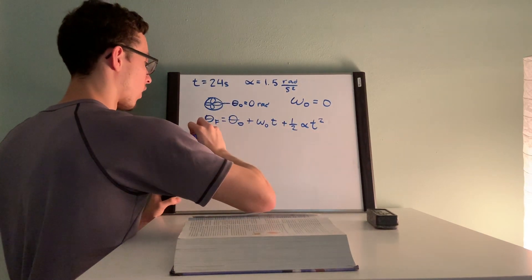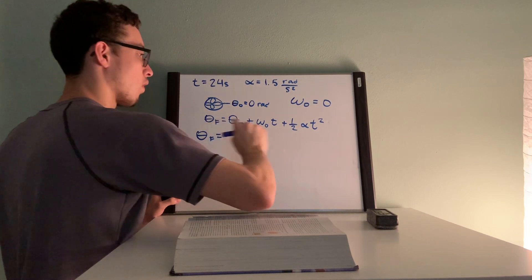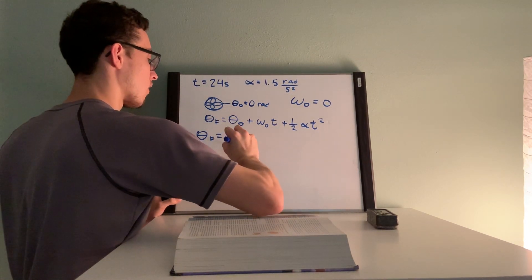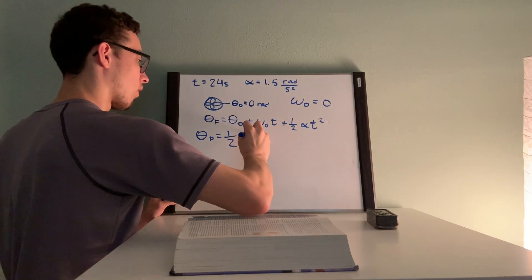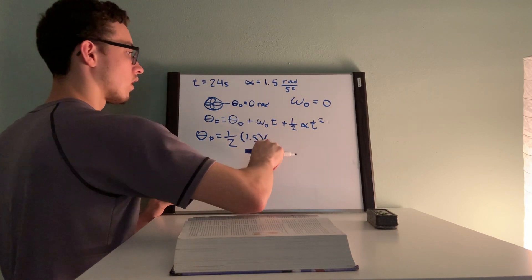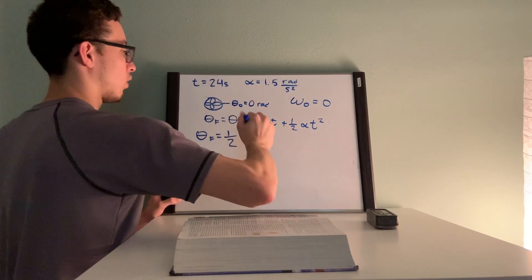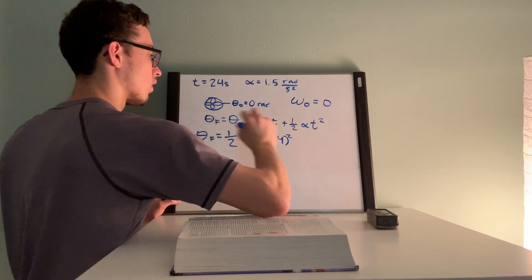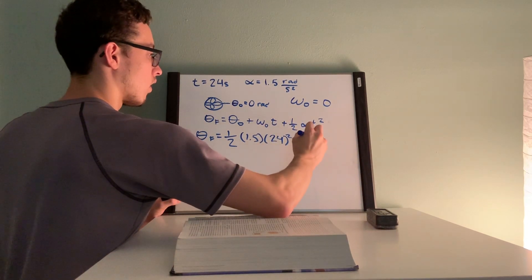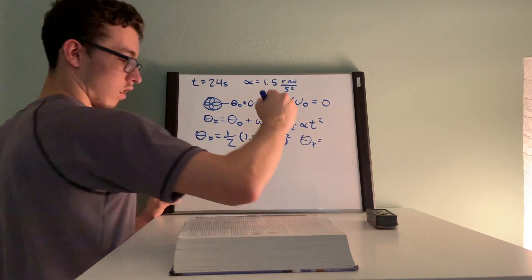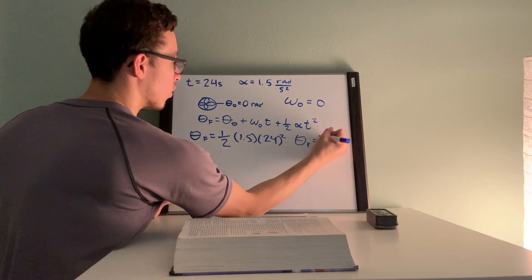Our initial angle is also zero, so these terms are going to go away and it's just going to be these two. So solve for theta final, we have one half acceleration 1.5 times time squared, 24 squared. Now you should receive a value of 432 radians.